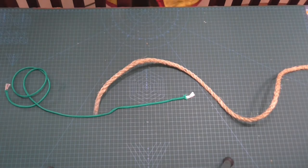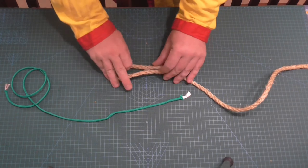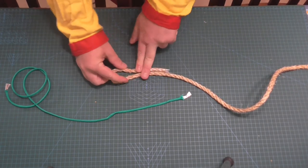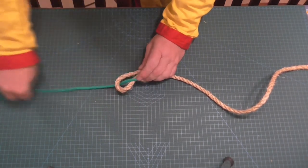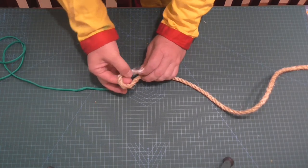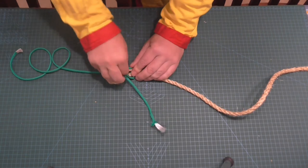We can make a quick release version of the sheet bend by doing the same kind of knot. Alrighty. So we have a thicker rope and we've put that into a diameter. Now we're going to put the narrow rope